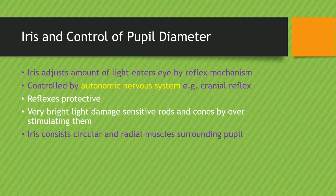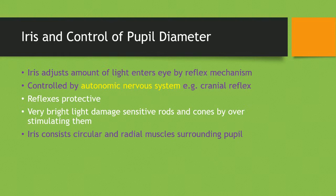The iris controls the pupil diameter. The iris adjusts the amount of light entering the eye by a reflex mechanism controlled by the autonomic nervous system. This is an autonomic cranial reflex. These reflexes are protective — very bright light can damage rods and cones by overstimulating them. For example, if you look directly at the sun your iris will reduce the pupil diameter to a very small size, which protects the eye by reducing the amount of light entering. The iris consists of circular and radial muscles surrounding the pupil.